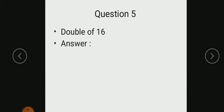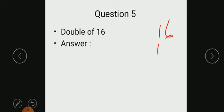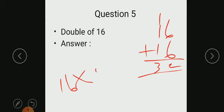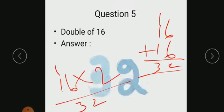Double of 16. Here also you have to add 16 plus 16, which becomes 32. Or 16 into 2. 2 sixes are 12, 1 carry. 2 ones are 2 plus 1 is 3. It is 32.